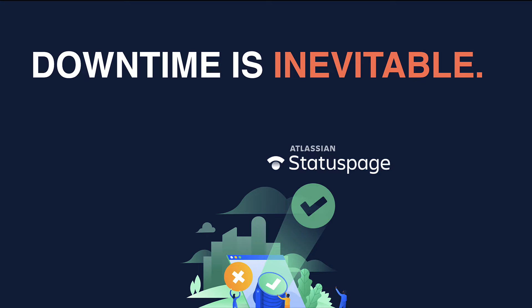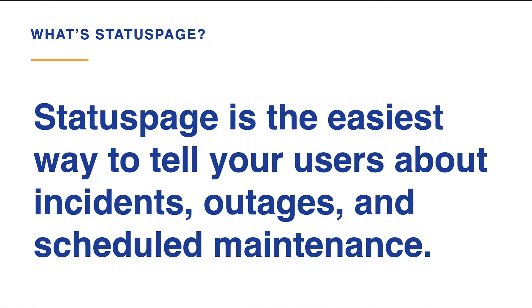If you run a service, you know that downtime is a fact of life. Bugs in production, networking problems, downstream impacts of third-party services, and various other issues can impact your service performance. But with the right type and frequency of communication, you can alleviate the stress your customers and responders feel during an incident. Atlassian's Status Page is the communication piece of your incident management process.